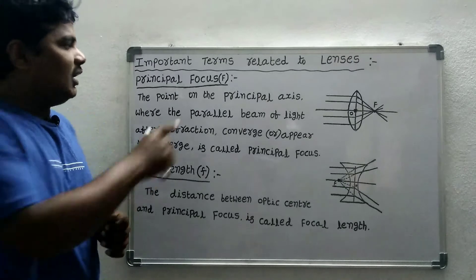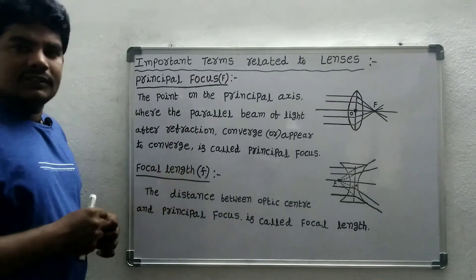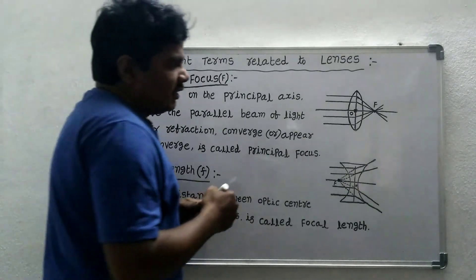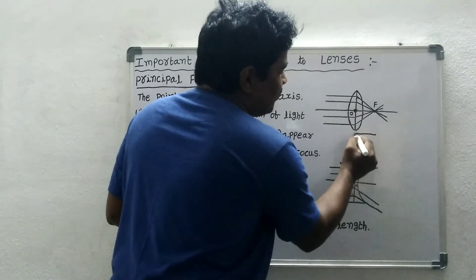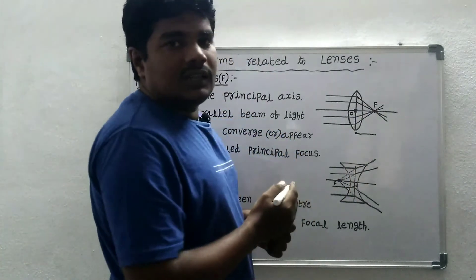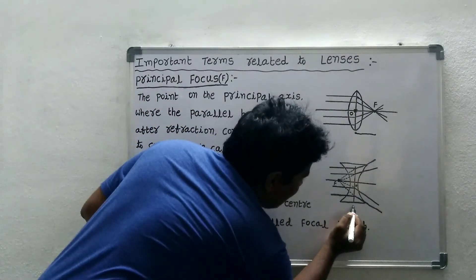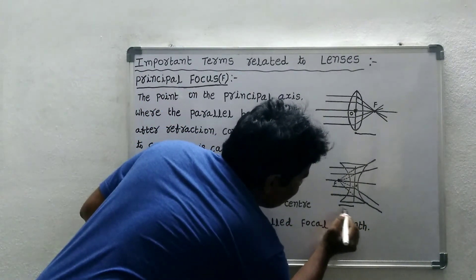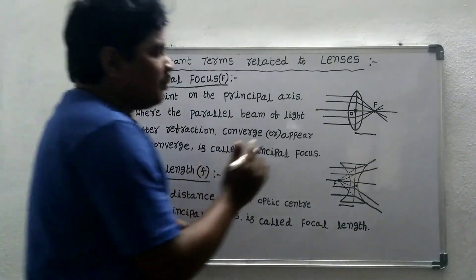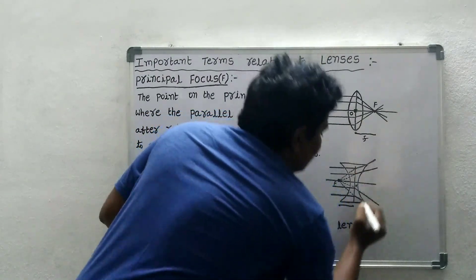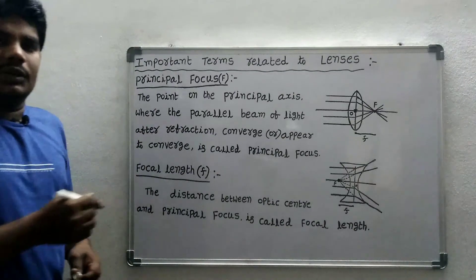Next: focal length. The distance between the optic center and the principal focus is called the focal length. It is represented by the letter small f. This concludes the discussion on focal length.